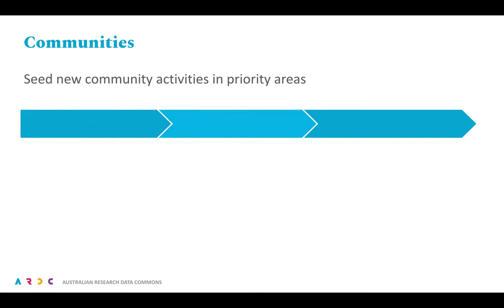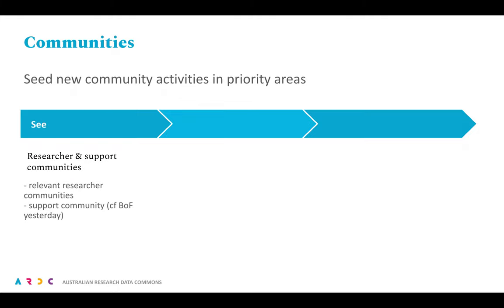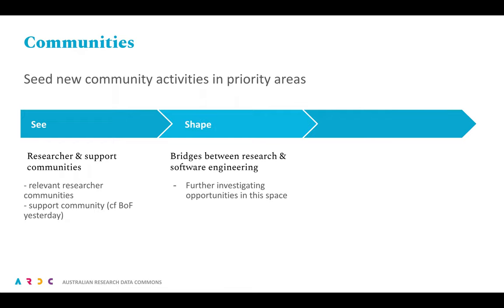Broadly speaking, we are looking to seed community activity across all three areas. For See, we are considering relevant researcher communities at a scale that we can handle, as well as working with existing research support communities. For Shape, we are still investigating, but the agenda consultations unearthed a large number of potential partners. For Sustain, we are still too early to report back, but this clearly relates to supporting the RSE Association of Australia and New Zealand.